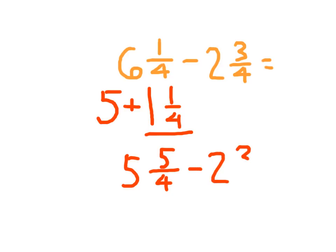I've now shown my regroup work here, where five and five-fourths minus two and three-fourths, I start with my whole numbers as five minus two, which is three. And then five minus three in my numerator is two. And then my denominator stays the same as being four.